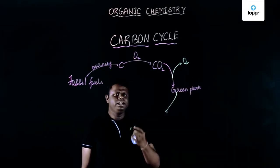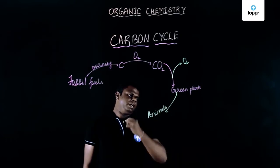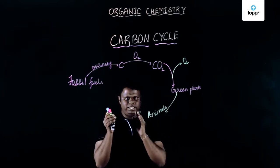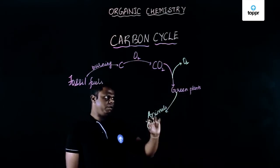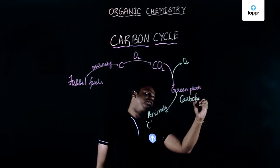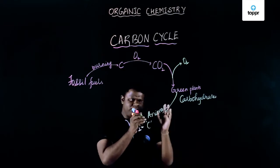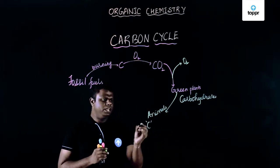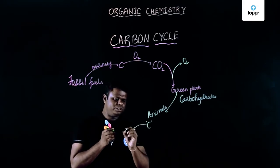These green plants are eaten by animals and once the animal eats them, the carbon which is present in these green plants is reserved as carbohydrates. Carbohydrate is consumed by these animals and carbon is then released as carbon dioxide back.